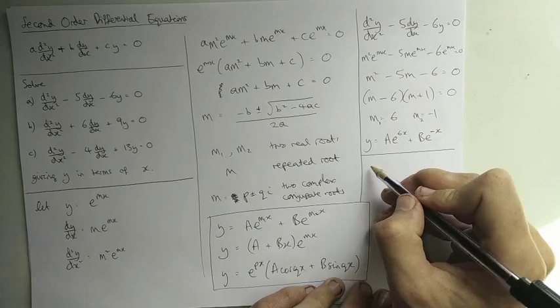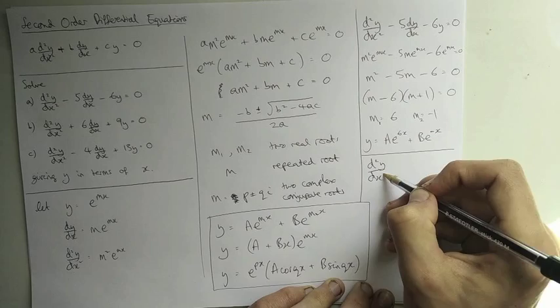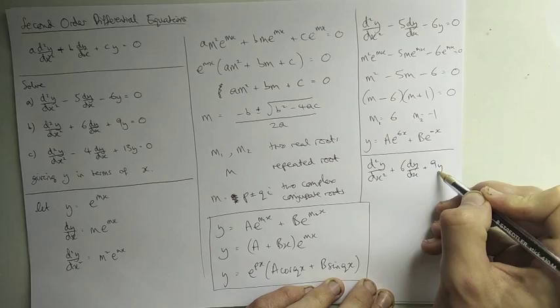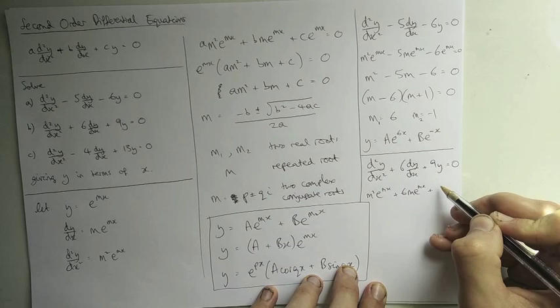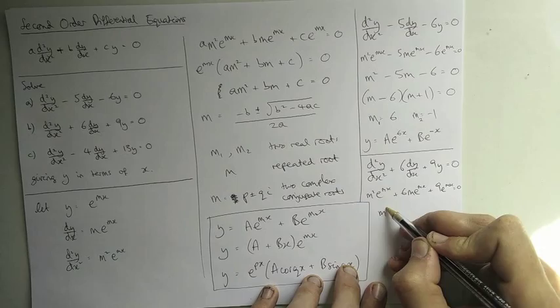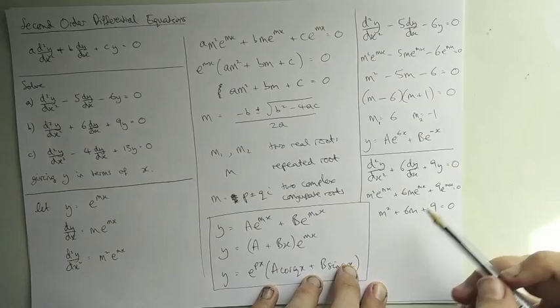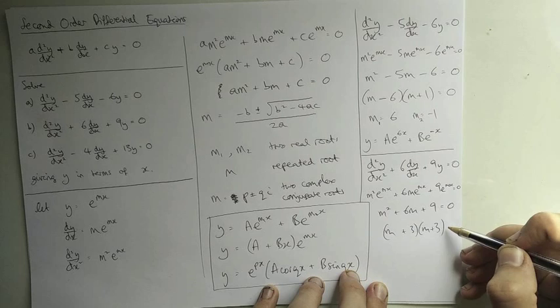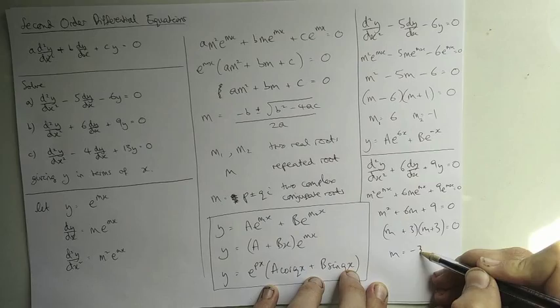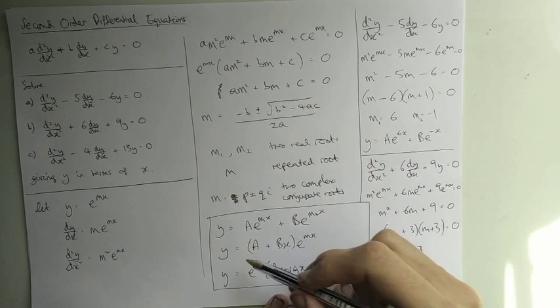Let's try the next one: d²y/dx² + 6 dy/dx + 9y = 0. Substituting gives m² e^(mx) + 6m e^(mx) + 9 e^(mx) = 0. Cancelling e^(mx) leaves m² + 6m + 9 = 0. We can factorize this as (m + 3)² = 0, since 3 × 3 = 9 and 3 + 3 = 6. So m = −3, a single repeated root. Using the repeated root form: y = (A + Bx)e^(−3x).